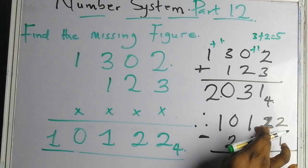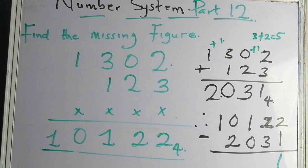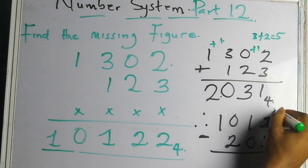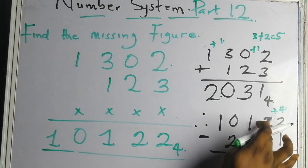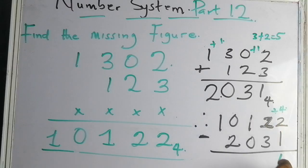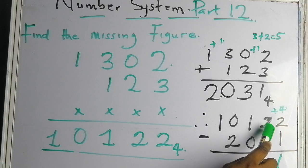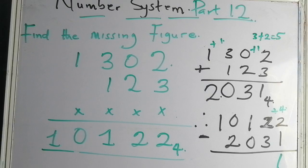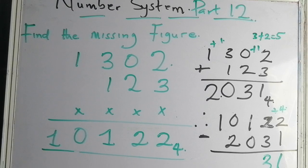Because we are working with subtraction in this base, the one borrowed becomes four — the base value. So two plus four equals six. Six minus three equals three. Three is not up to the base, so we write three. After borrowing, the column we borrowed from goes from one to zero.